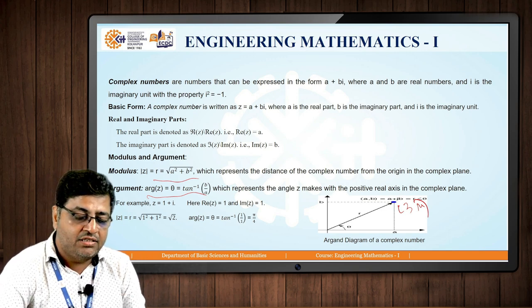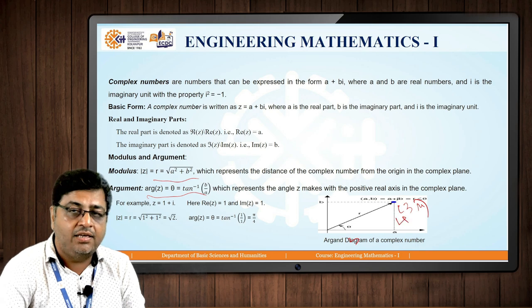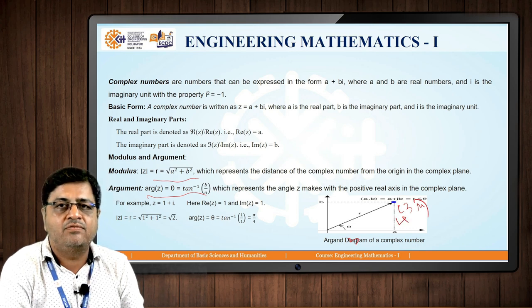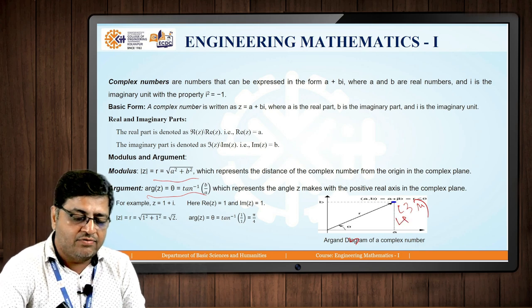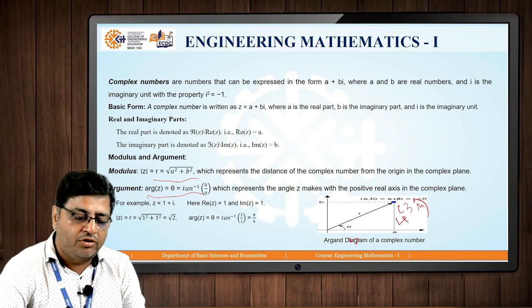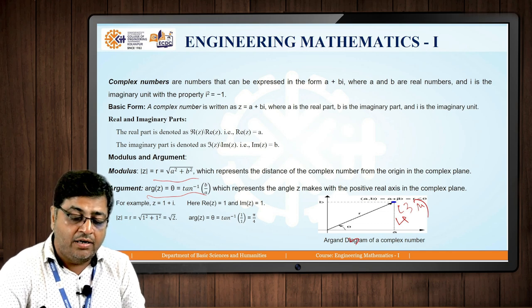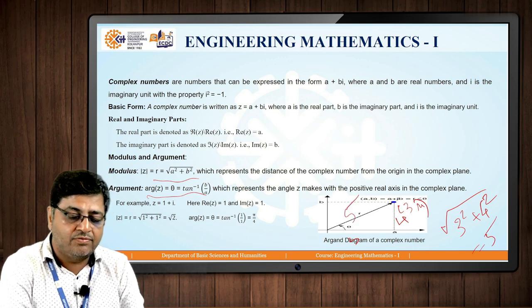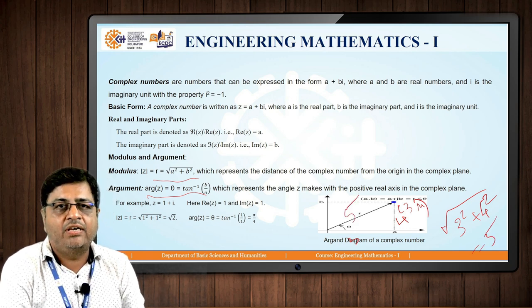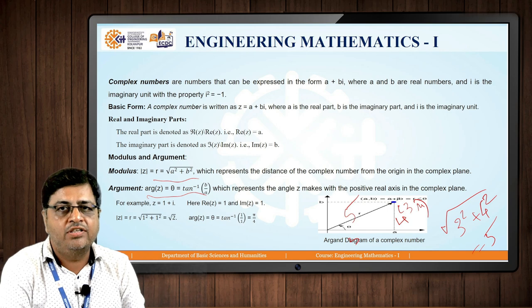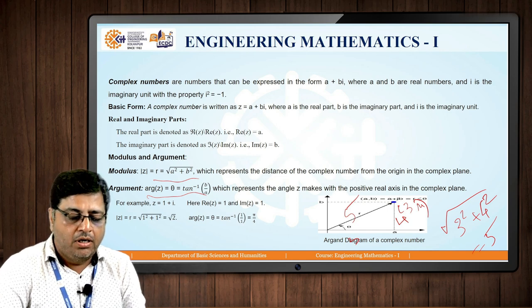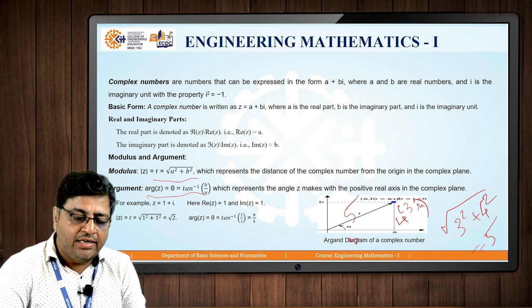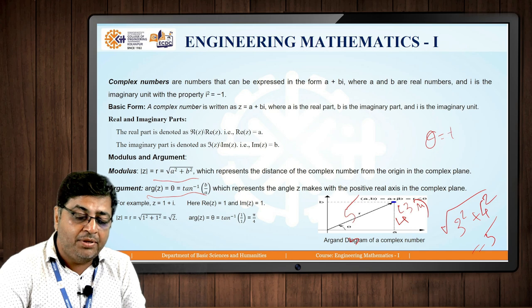Here distance from x axis is 3 and distance from y axis is 4 and the distance from origin is said to be the modulus, which is under root of 3 square plus 4 square and which is 5. The distance from origin is 5, which we call it as a modulus of a complex number. What is theta here?